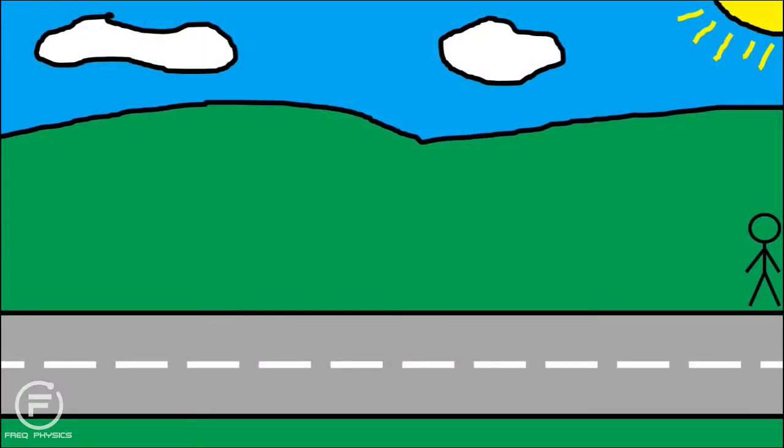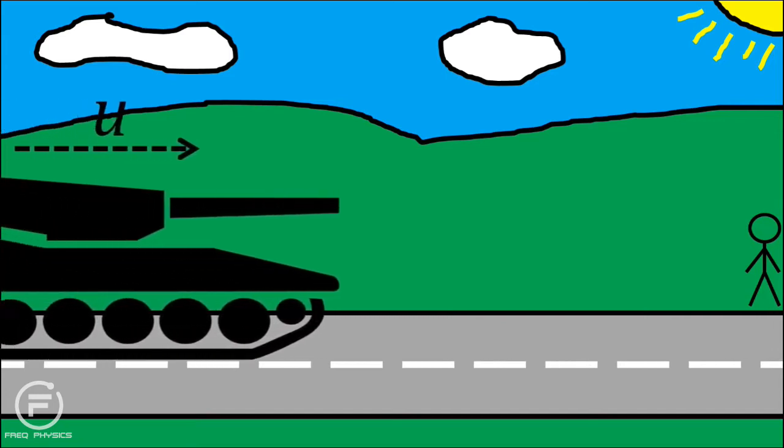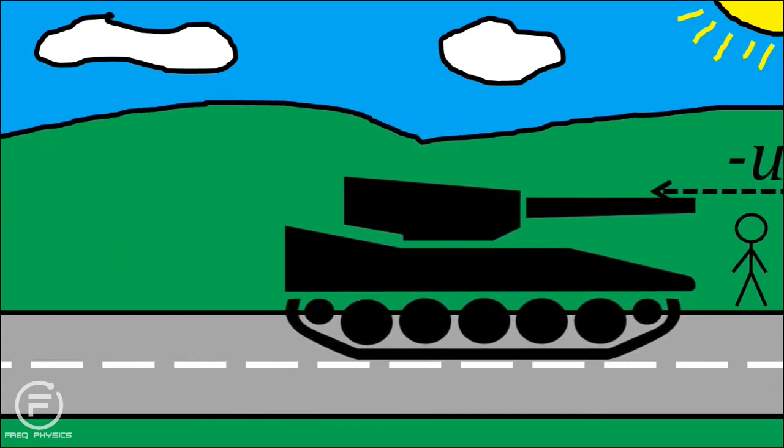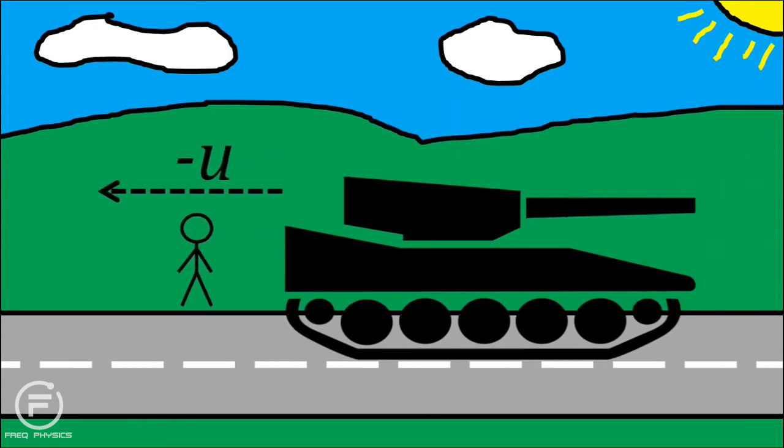Let's take a closer look at different frames of reference. Imagine a tank driving along a road. From the frame of reference of the road, the tank is moving with a constant velocity, let's call it U. However, for the tank driver, the tank is stationary and the road is moving backwards with velocity minus U. Both of these points of view are valid inertial frames.